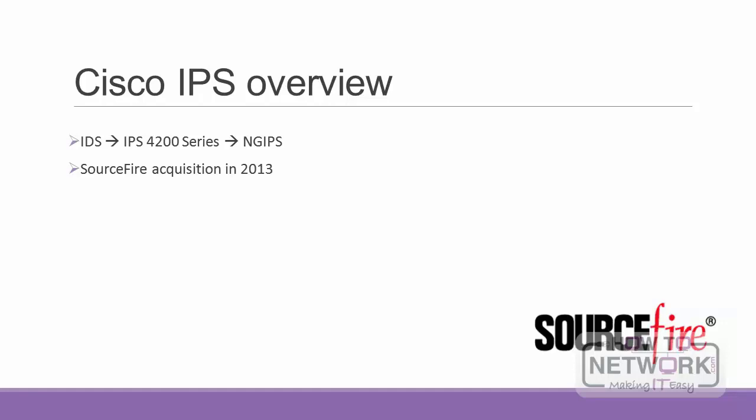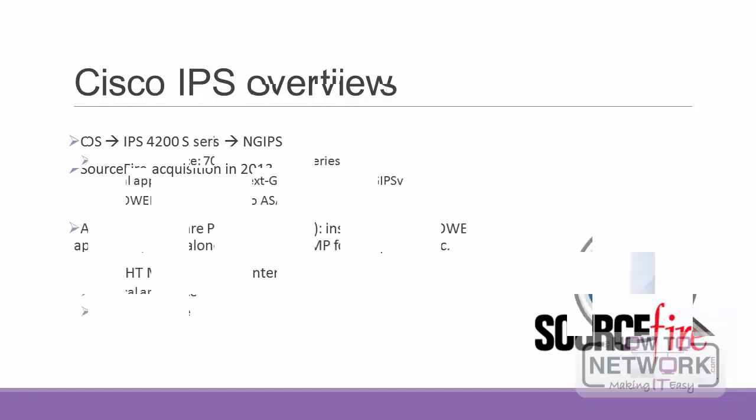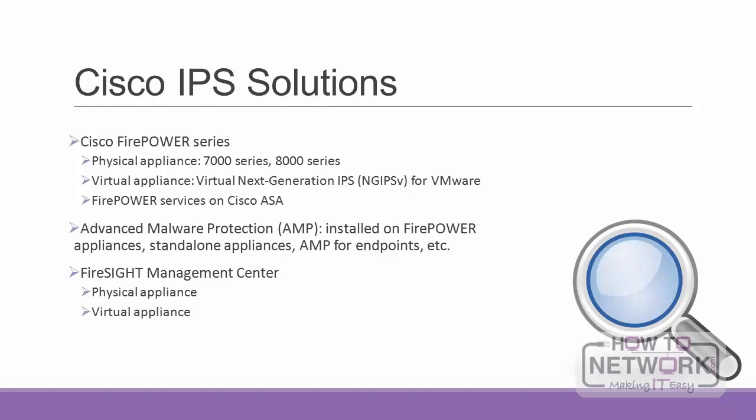The next-gen IPS solutions include the Firepower series, Advanced Malware Protection, and the FireSIGHT Management Center — the result of Cisco's acquisition of Sourcefire in 2013. Sourcefire was behind Snort, ClamAV, and other security products. The Firepower series can come as a physical appliance such as the 7000 or 8000 series, or as a virtual appliance. Firepower services can also run on the Cisco ASA 5500-X series appliances.